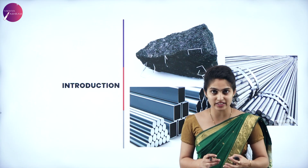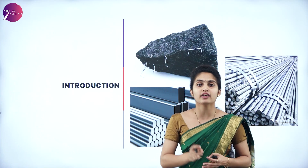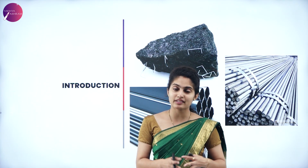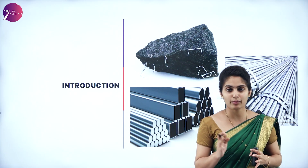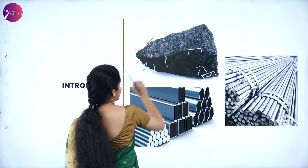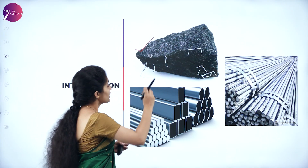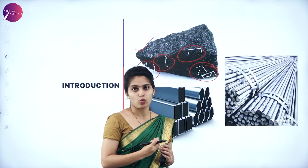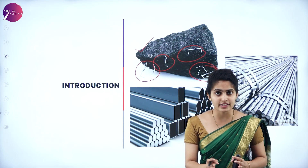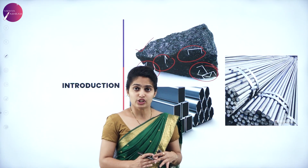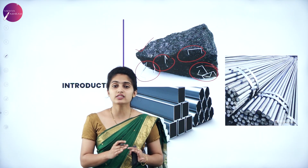This magnetite produced an attracting effect on iron, steel, and other metals. The metals getting attracted to magnetite were known as magnetic materials, and the phenomenon of attracting magnetic materials by this ore was called magnetism. The natural magnet — the ore present at that place — is shapeless, has no definite shape, and is weak in nature.